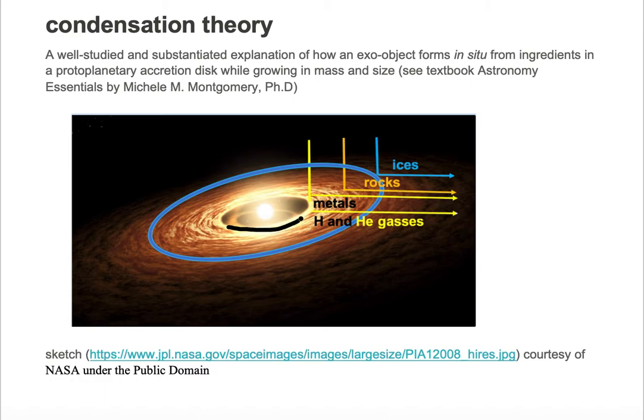The material closest to the protostar in the protoplanetary disk is where the temperatures are so hot that only metals can form. As you step out in radii, the temperature will cool and you'll be able to form different materials.